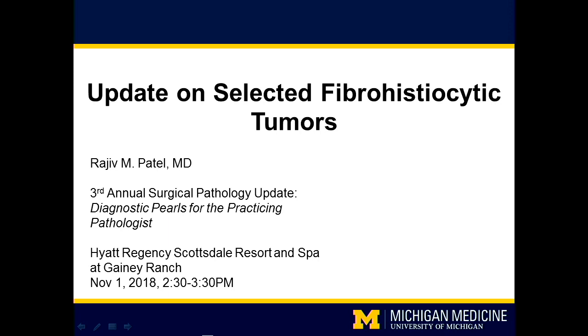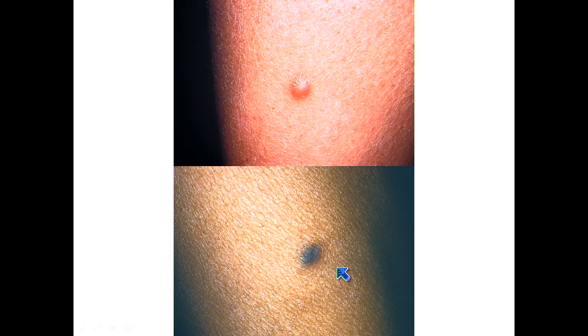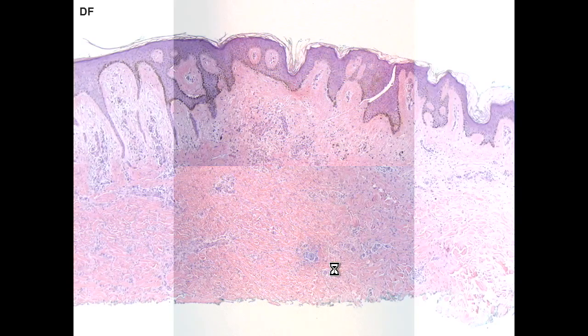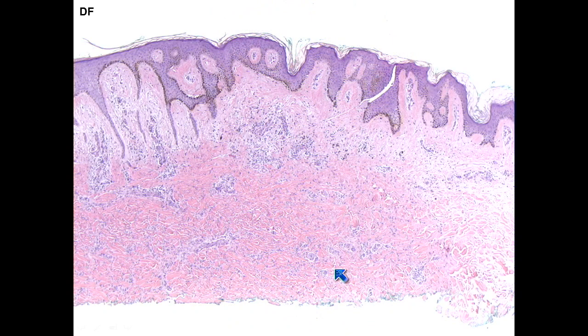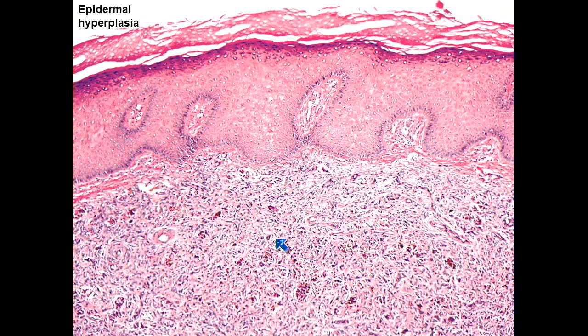This is sort of the classic presentation — a brown papule, well circumscribed, on the lower extremities of a younger patient. Here are the classic features: epidermal hyperplasia, the so-called 'dirty feet' epidermal hyperpigmentation, and then this spindle cell proliferation within the dermis.